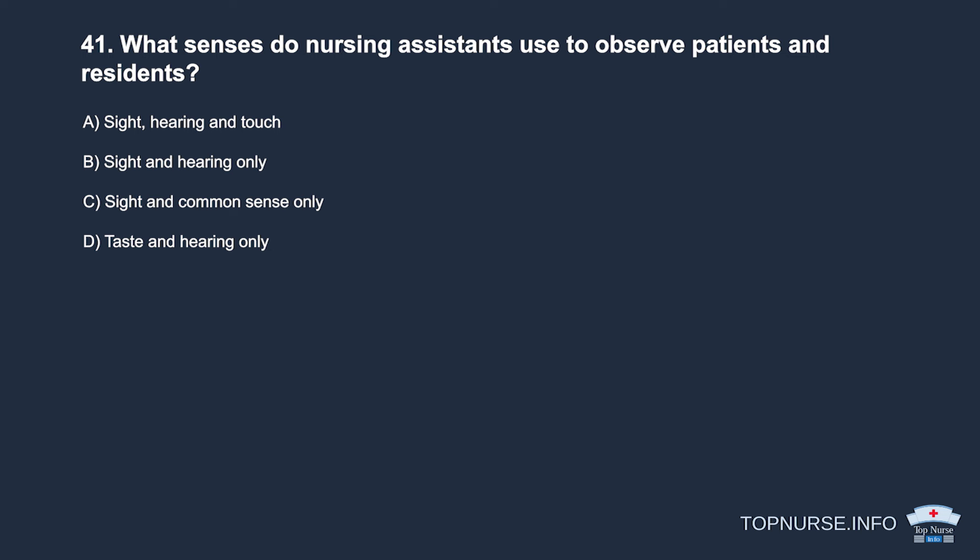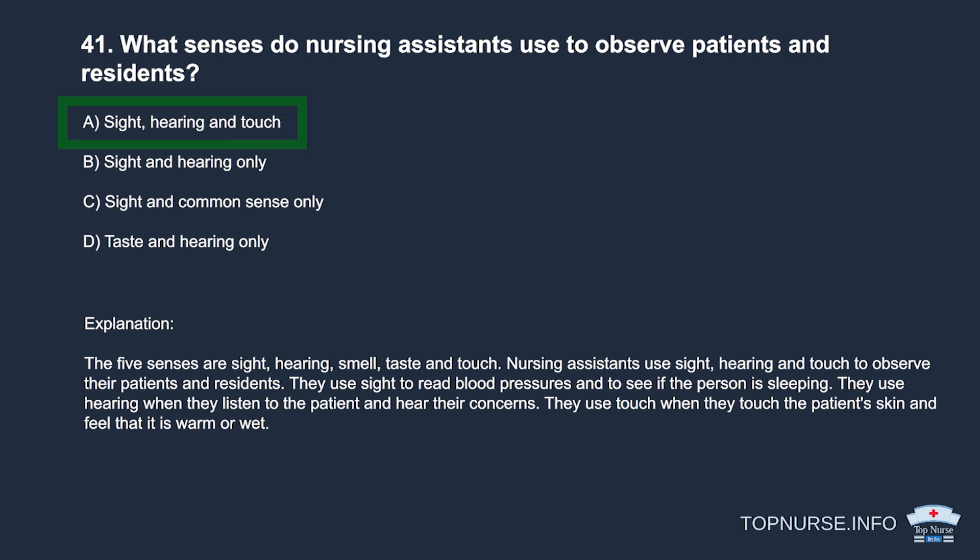Question 41: What senses do nursing assistants use to observe patients and residents? a. Sight, hearing, and touch. b. Sight and hearing only. c. Sight and common sense only. d. Taste and hearing only. Correct answer: a. Sight, hearing, and touch. Nursing assistants use sight to read blood pressures and observe patients, hearing to listen to patient concerns, and touch to feel if skin is warm or wet.